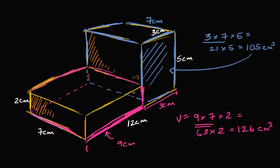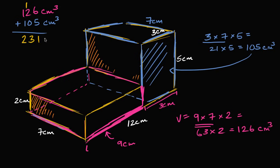The total volume of the entire figure is the magenta volume plus the blue volume: 126 cubic centimeters plus 105 cubic centimeters. Six plus five is 11, carry the one; then 110 plus 210 gives three tens, and 100 plus 100 is 200, so we get 231 cubic centimeters for the entire figure. Fascinating.